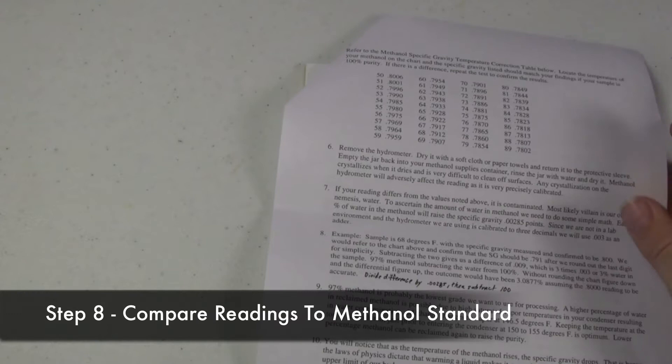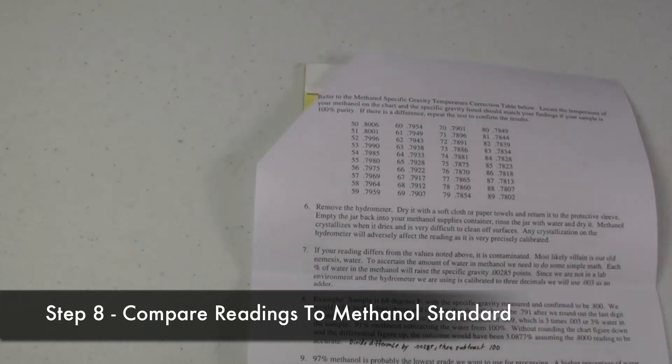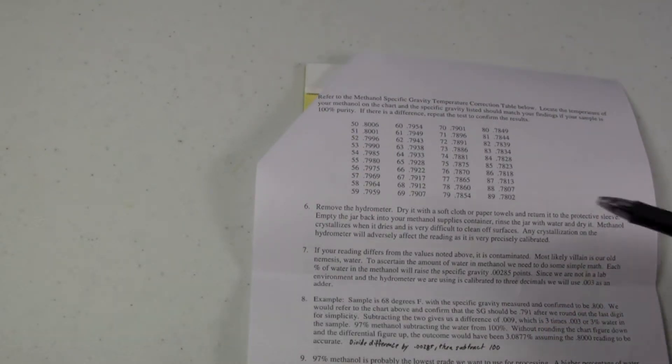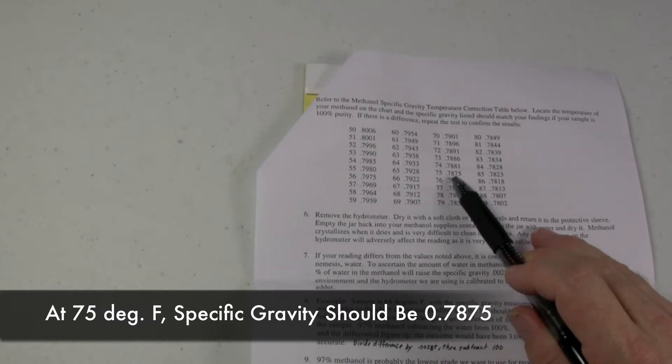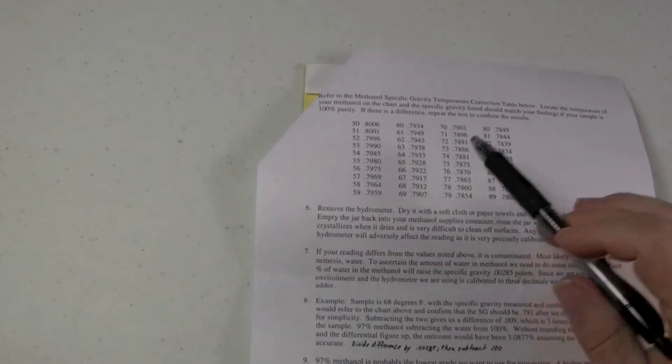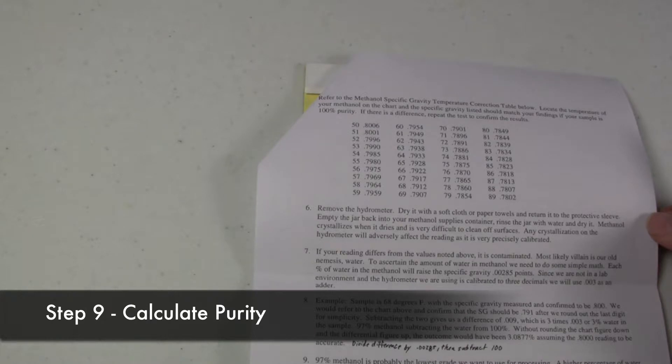What we do is we grab the included chart that comes with our hydrometer. And we look at the temperature at 75 degrees Fahrenheit. Methanol, if it's 100% pure, should be .7875. I think our methanol is pretty pure. For the calculation purposes, let's go ahead and say that it's .788.